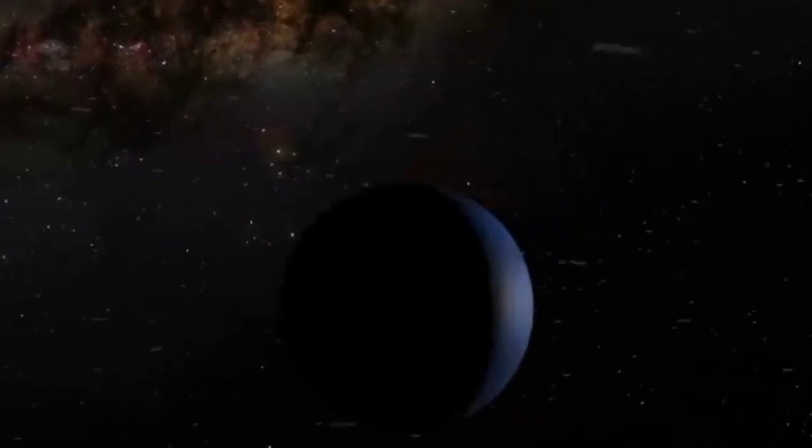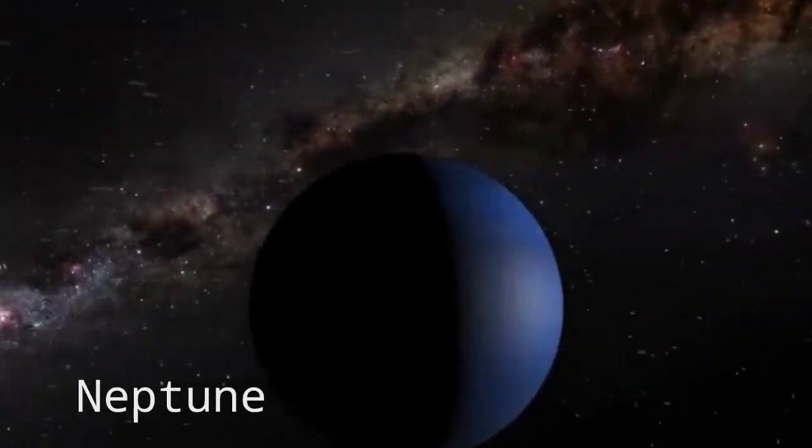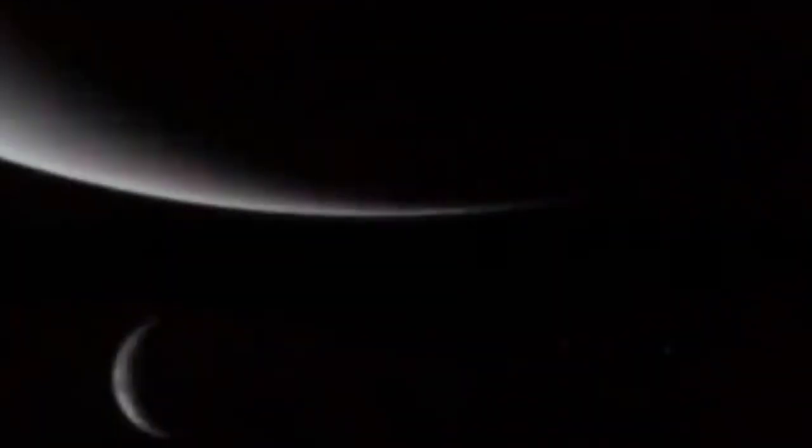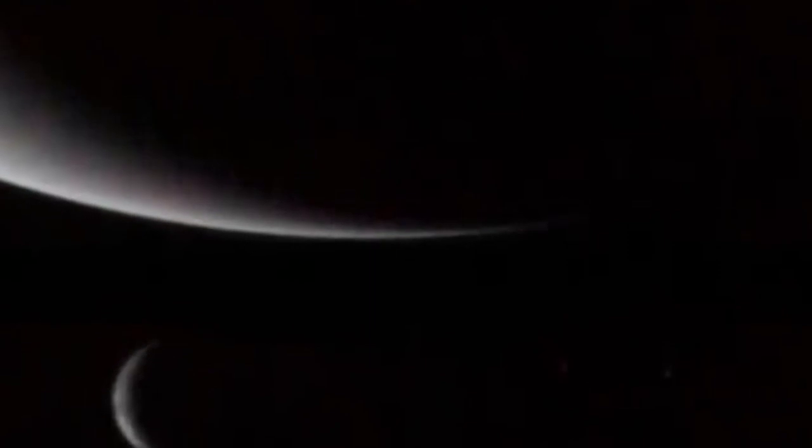And the last planet, Neptune is very similar to Uranus and is also the ice giant. It is so far from the sun and is the 8th planet of our solar system. It is the dark blue colored planet.